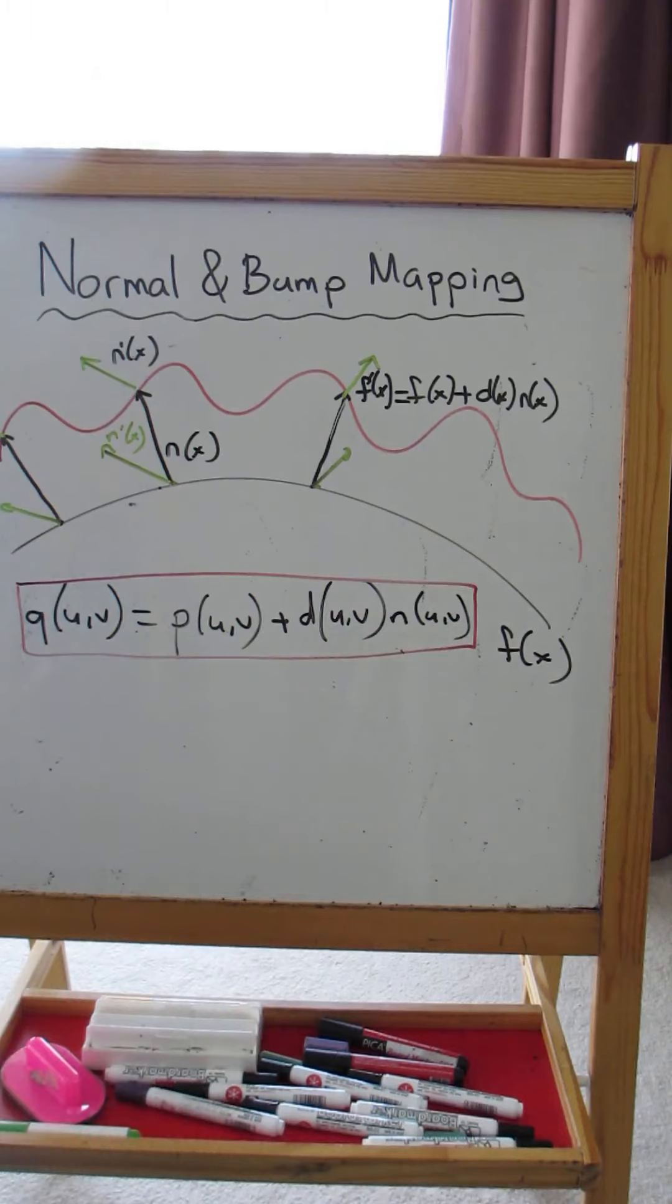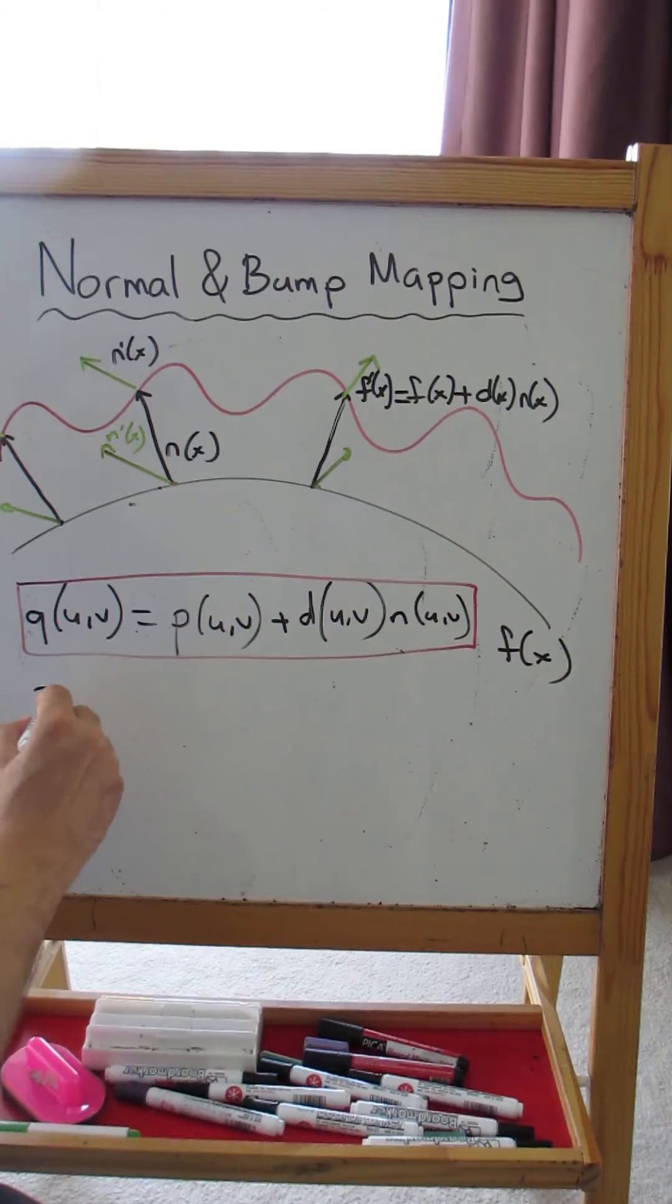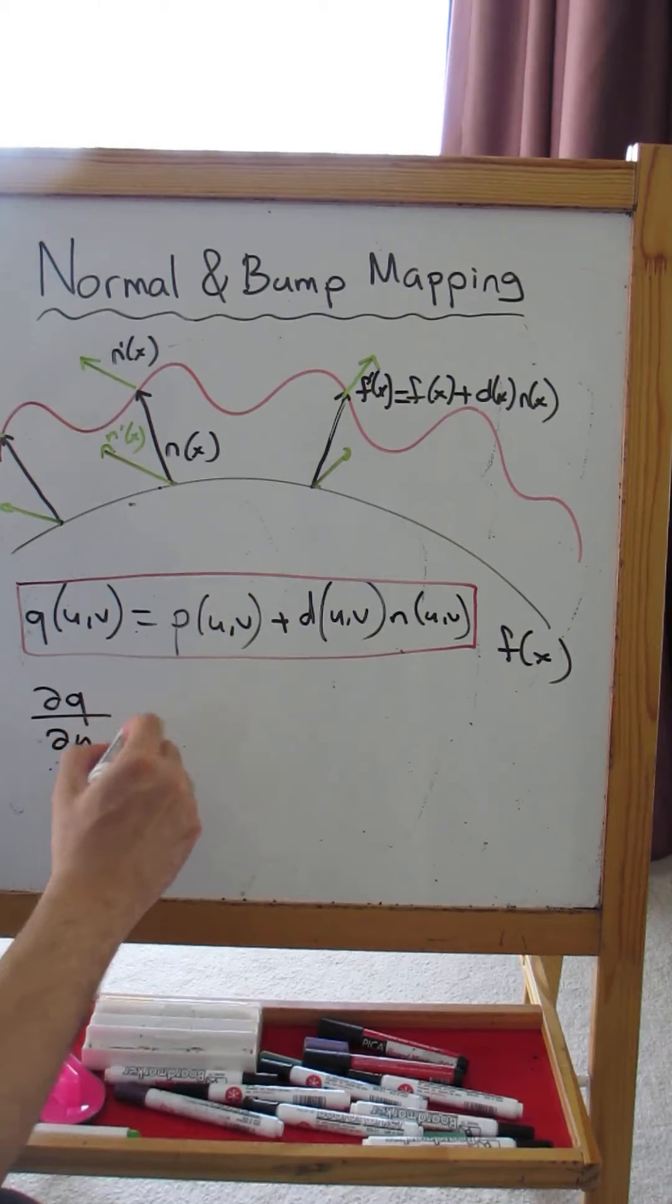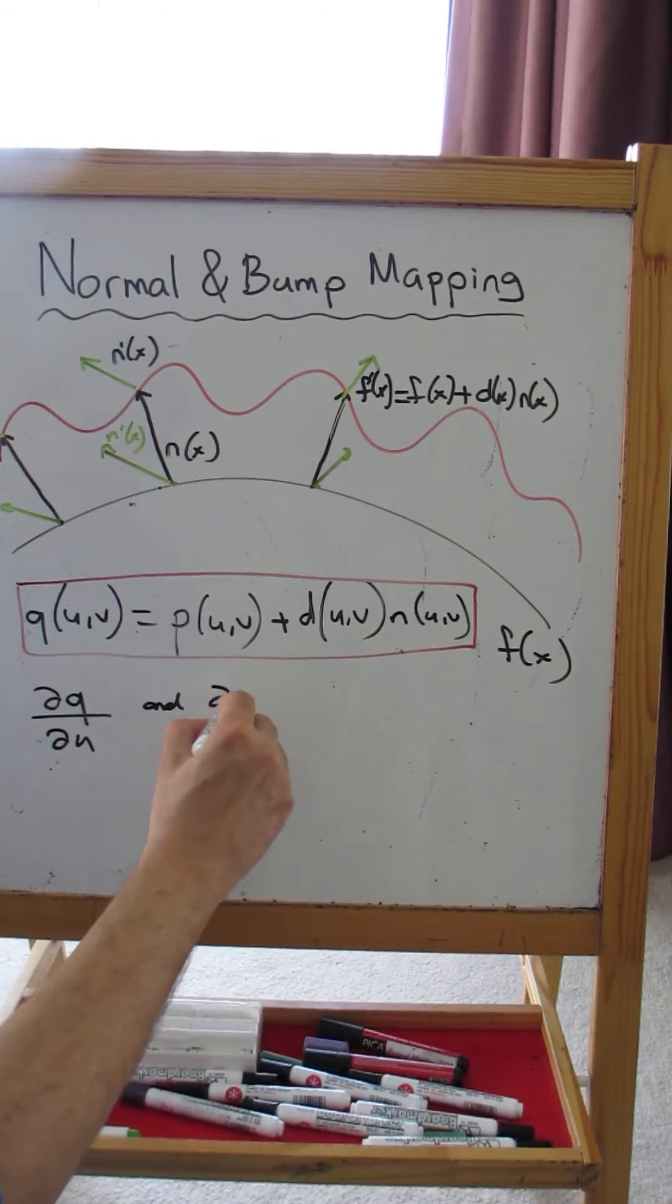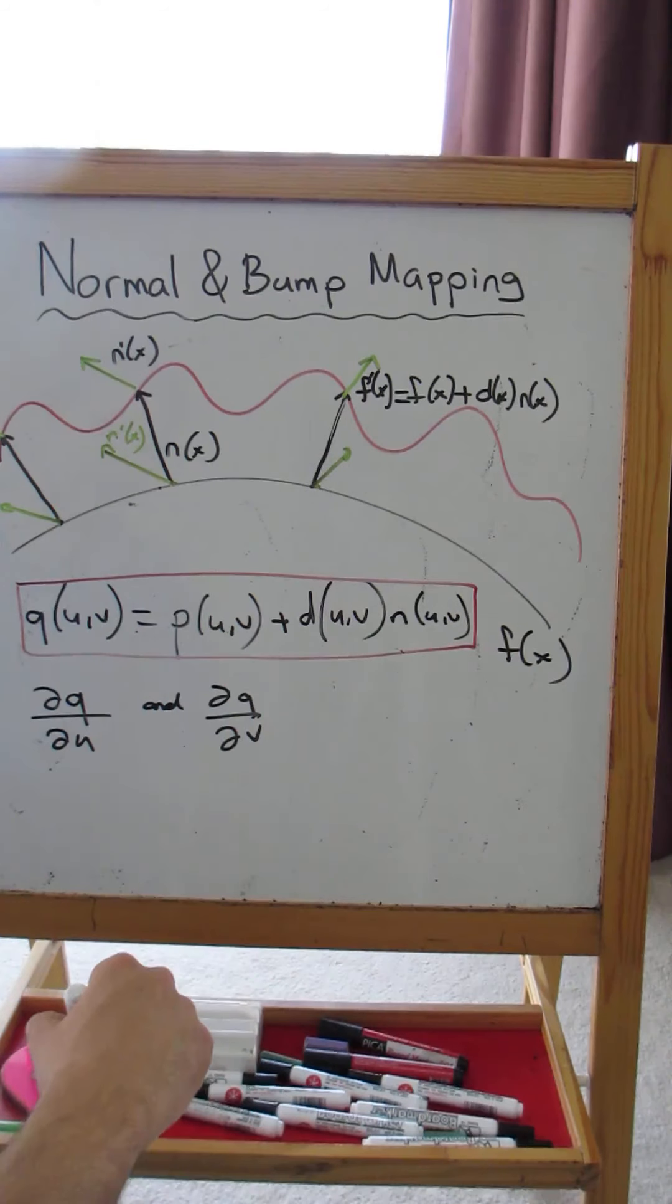So remember our goal was to compute the normal vector of the new surface, the normal vector of Q. So how do we compute the normal vector at Q? We can use the tangent vectors.